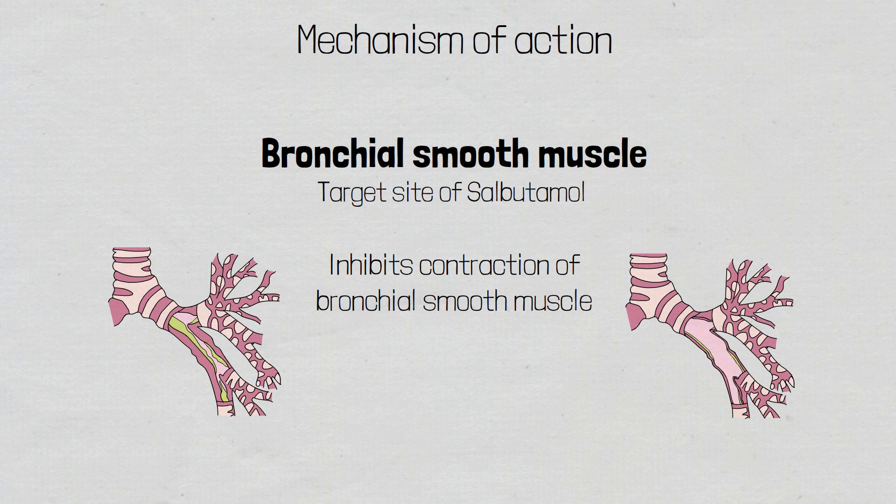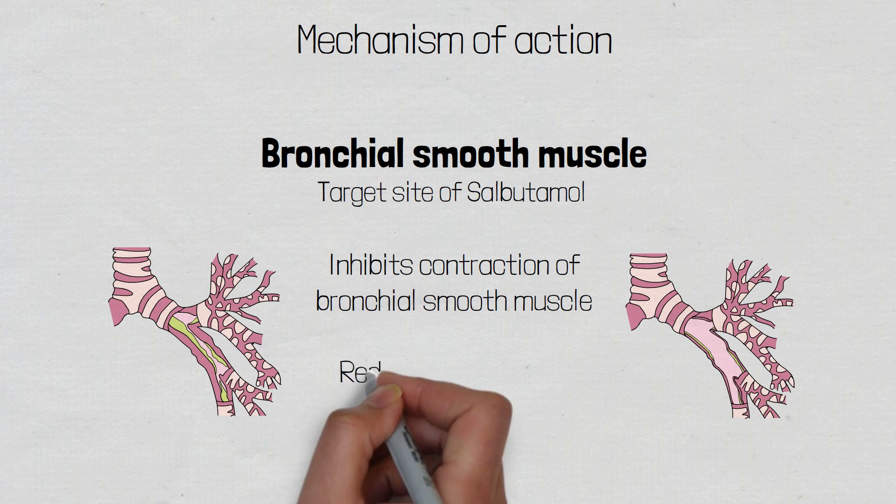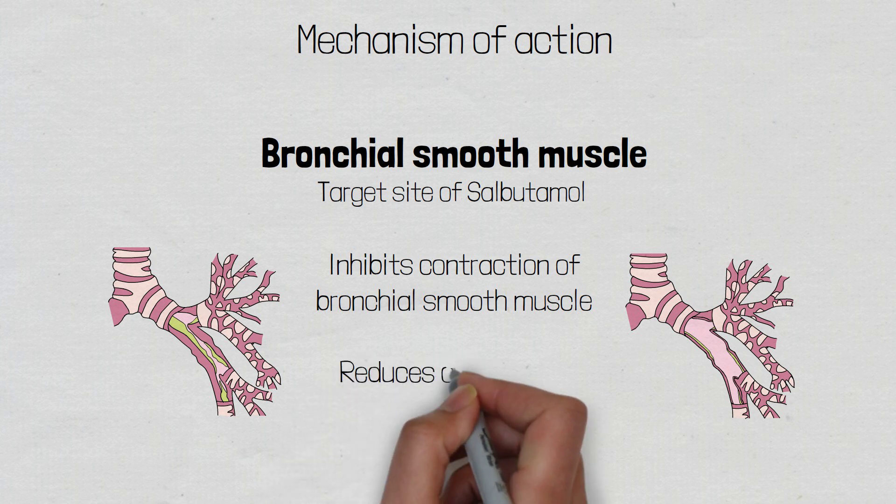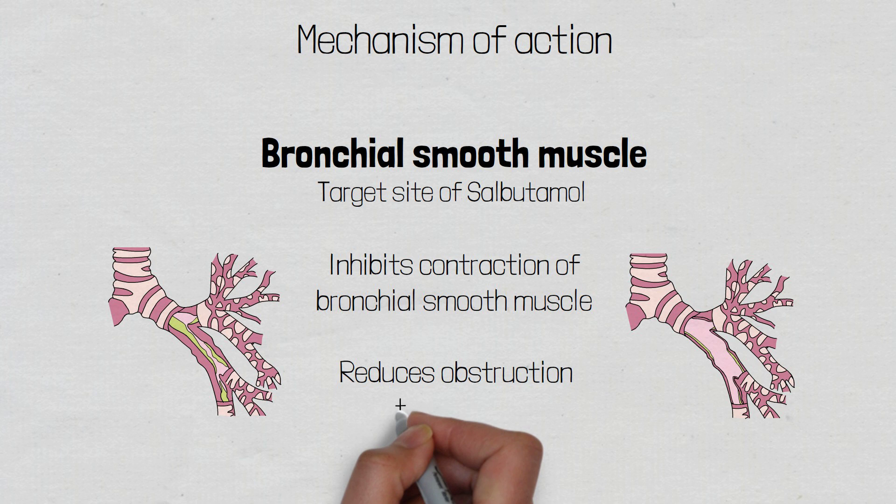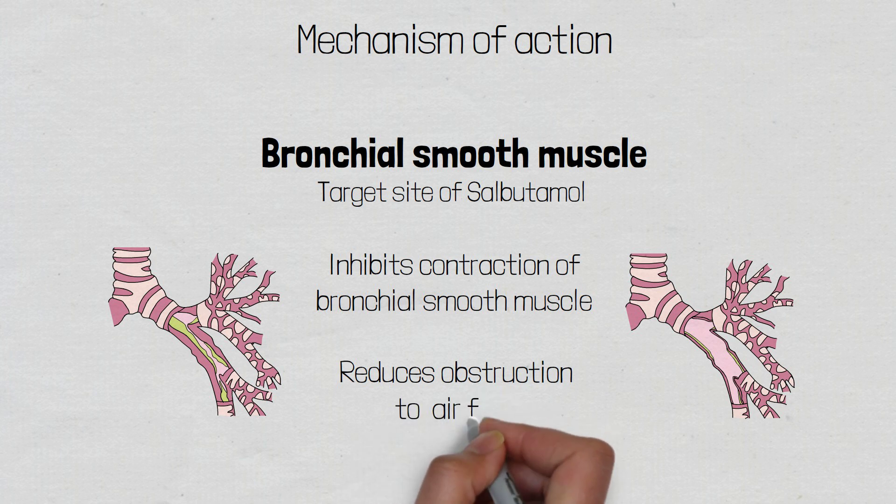This relaxation of bronchial smooth muscle leads to an increased airway diameter and an easier passage of air, making it easier to breathe.